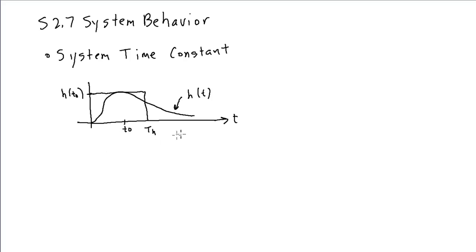So, mathematically, th is, we can get the total area of the impulse response. It's the integral from minus infinity to infinity of h of t dt. That would give us the area under this curve. The area of our pulse is ht0 times th.